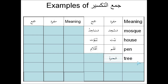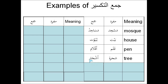Tree: Shajaratun, plural Ashjaarun. Again, you have a Hamza with a Fathah placed at the beginning, the Ta Marbuta is removed, and an Alif is placed between the Jim and Ra. It looks very much like the pattern of Aqlamun.